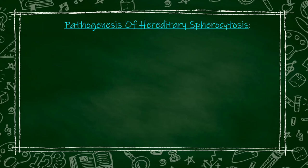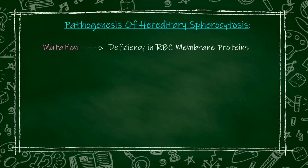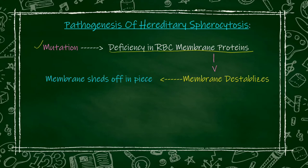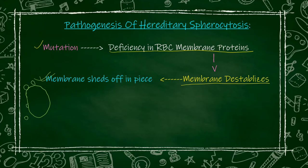The pathogenesis of hereditary spherocytosis — how this disease progresses and results in anemia: as soon as mutation occurs, there is deficiency of proteins in the RBC membrane. Due to this deficiency, the membrane becomes destabilized — the membrane which was previously stable is now destabilized, and starts breaking down into pieces.